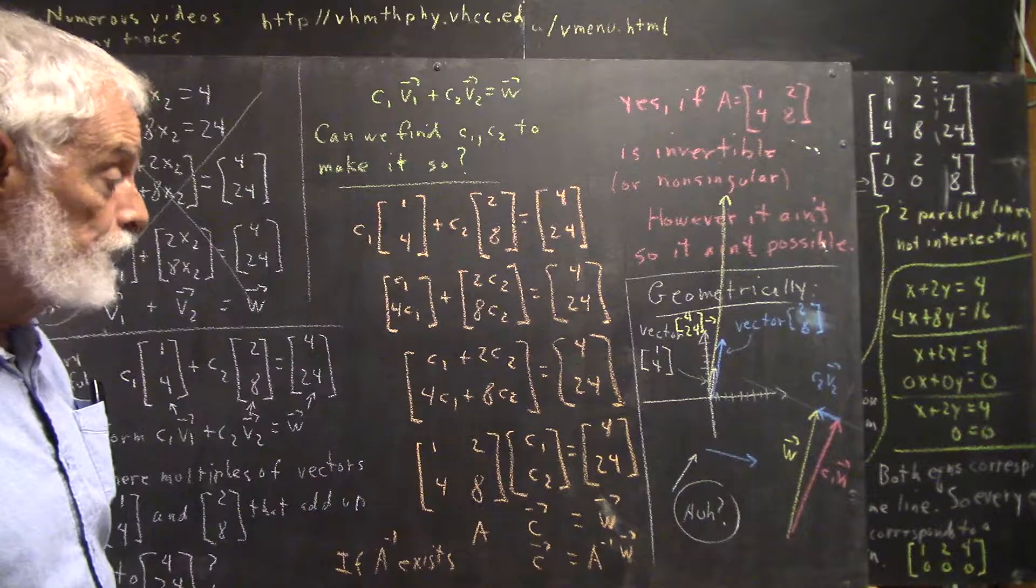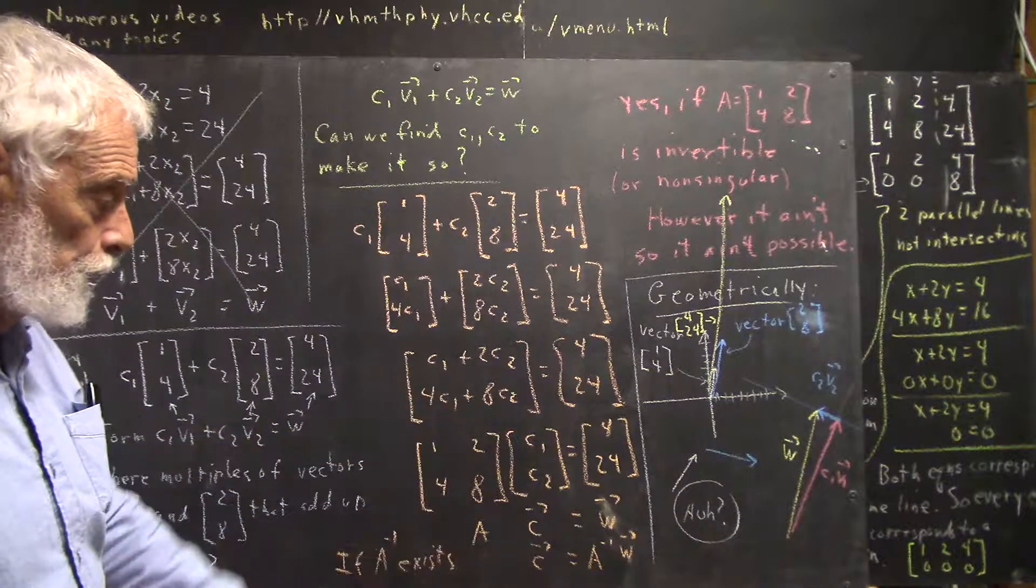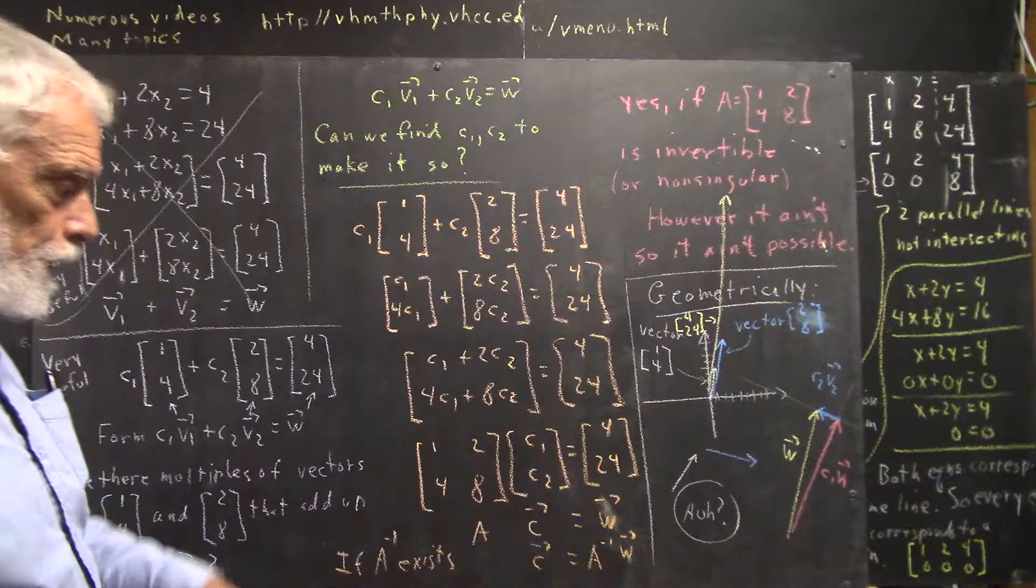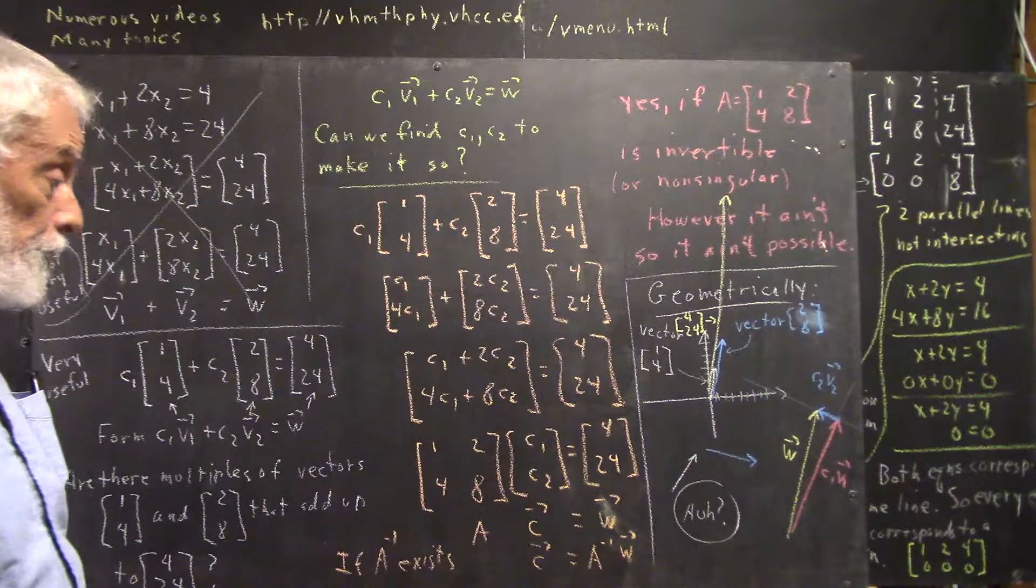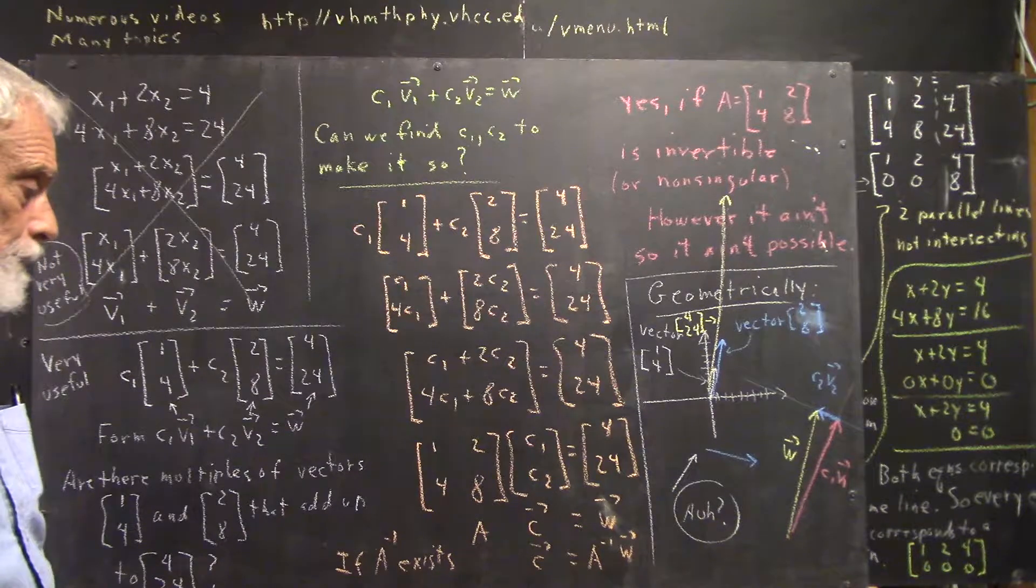You're never going to get this down to the identity matrix. So yeah, I say again answering my question here: yes, if A equals this is invertible or non-singular, however it ain't.